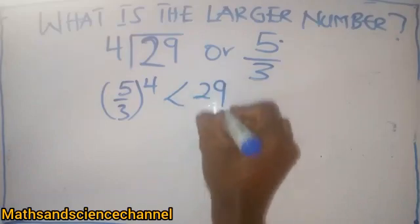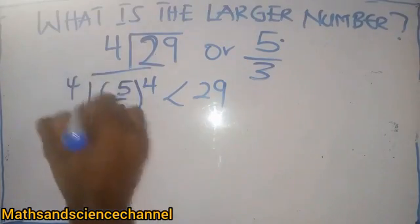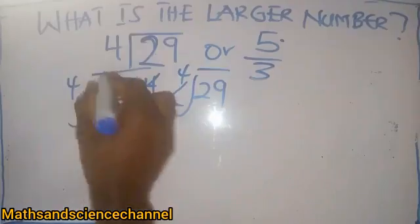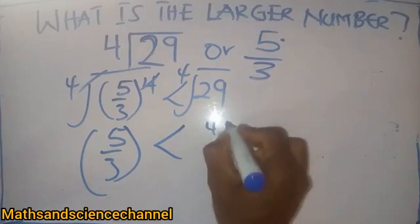less than 29. So in this case, what do I do? I'll put the fourth root on both sides. Let's get rid of that. I have 5 over 3 and then I have less than the fourth root